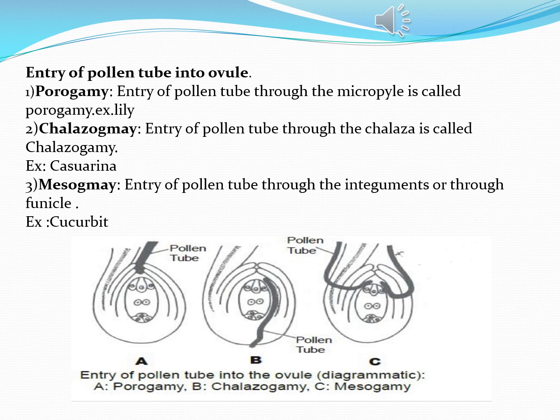We can observe these in diagrams. The first diagram shows porogamy, the second one shows chalazogamy, and the third diagram shows mesogamy.